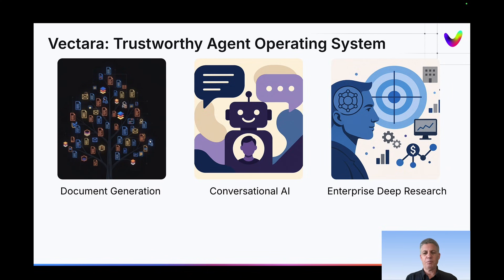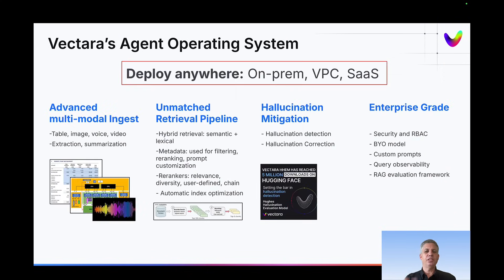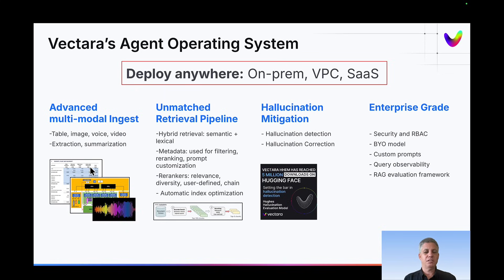Before I jump into Enterprise Deep Research, let me tell you a little bit more about our operating system for agents. It's a SaaS platform that also runs on your own VPC or on-premise in your own data center. We have very advanced multimodal ingest to support images and tables in a way that makes them findable and retrievable to make sense of them in a RAG or TICRAG workflow.